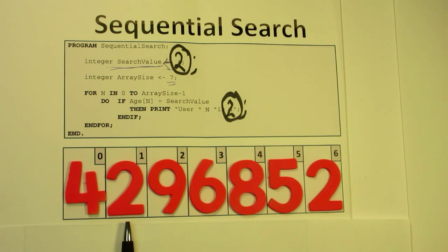Then we go to the next one. The second location, which is numbered as one, does have the number two, so we'll print out that user one is two.